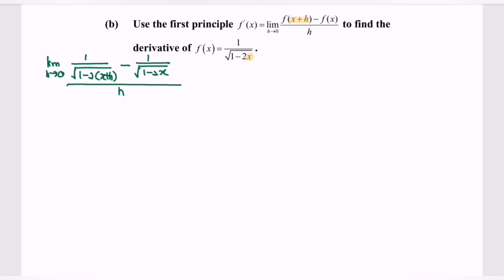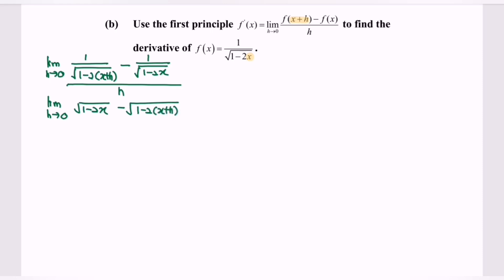Next, what we have to do is equate the denominators. So limit as h approaching 0, where we have square root of 1 minus 2x, minus square root of 1 minus 2 times (x plus h), over h multiplied by square root of 1 minus 2x.